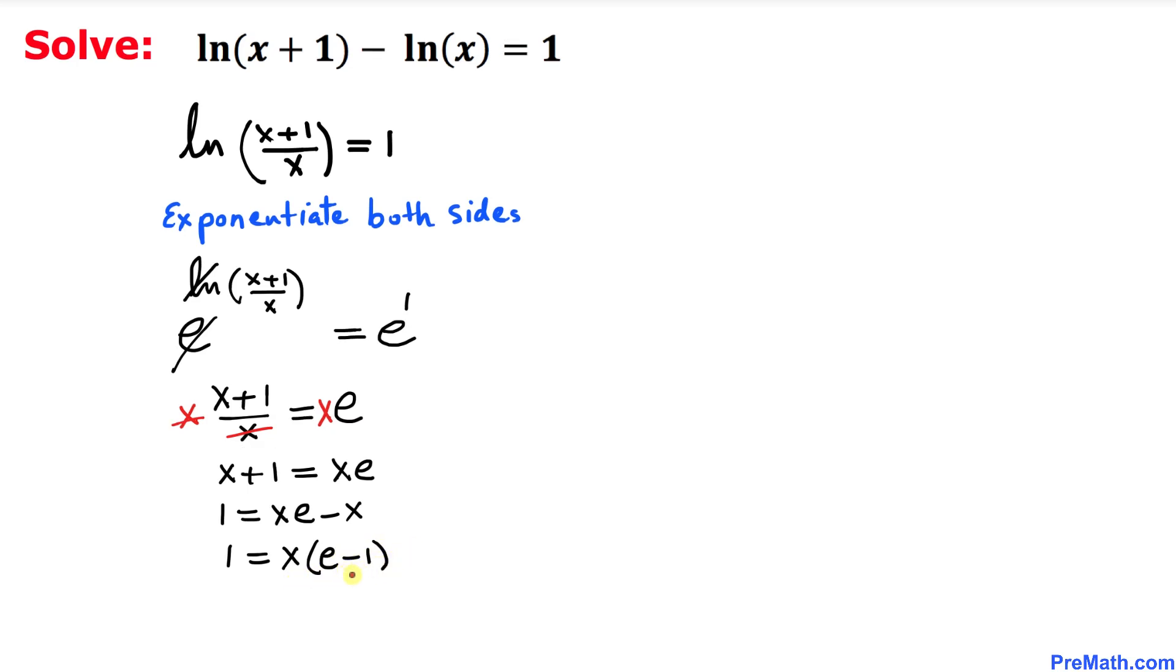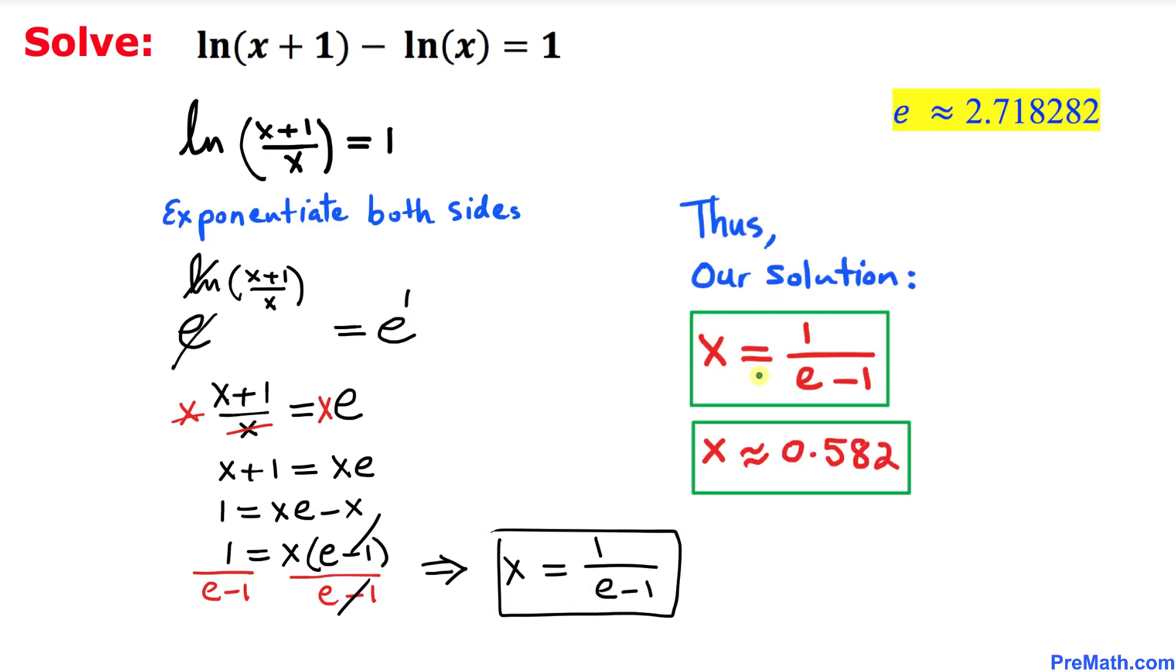Now let's divide both sides by e minus 1 to isolate x. So this e minus 1 and e minus 1 cancel out. Our x value turns out to be x equal to 1 divided by e minus 1, where e is approximately equal to 2.718. And if we apply this e value, x is approximately equal to 0.582.